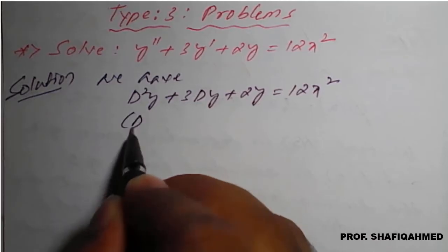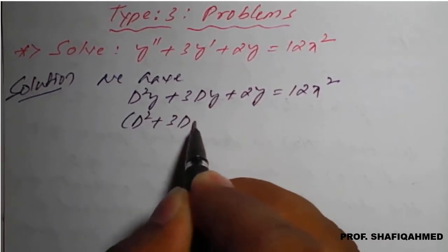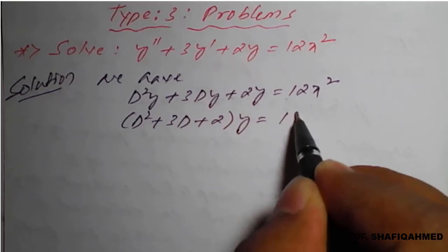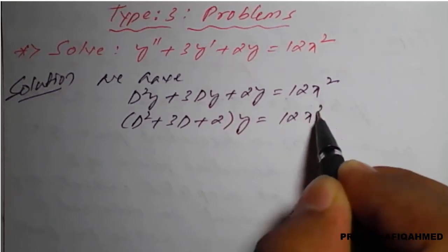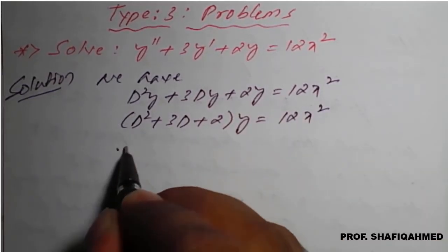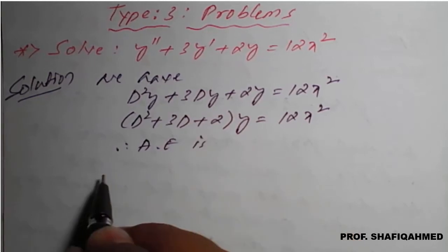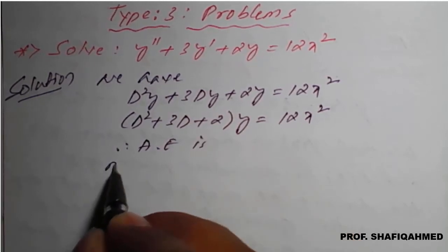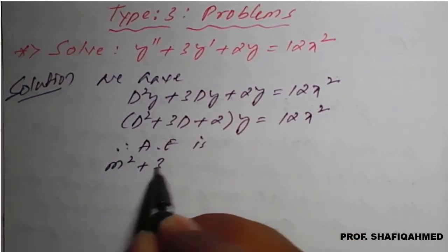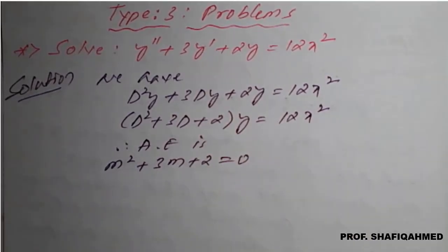Taking y common, we get d-square plus 3d plus 2 of y equal to 12x square. Therefore, the auxiliary equation is m-square plus 3m plus 2 equal to 0.